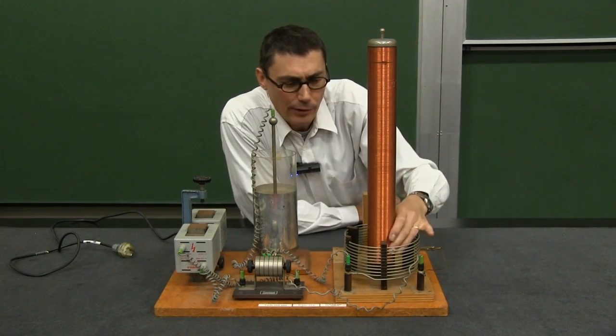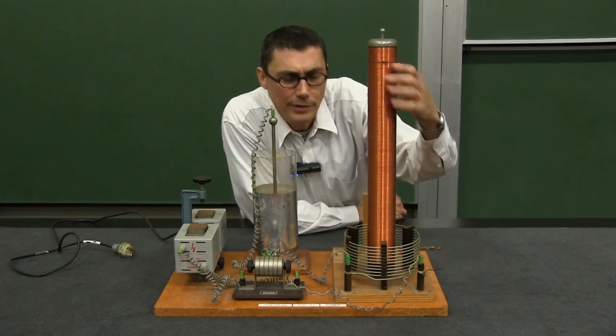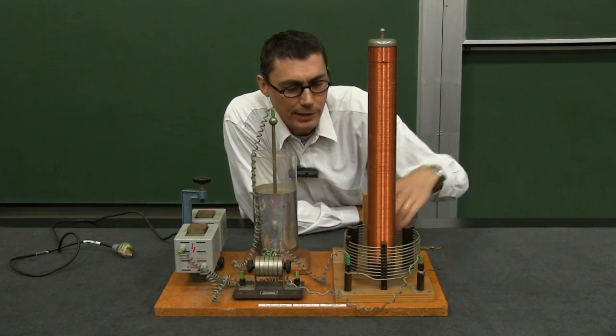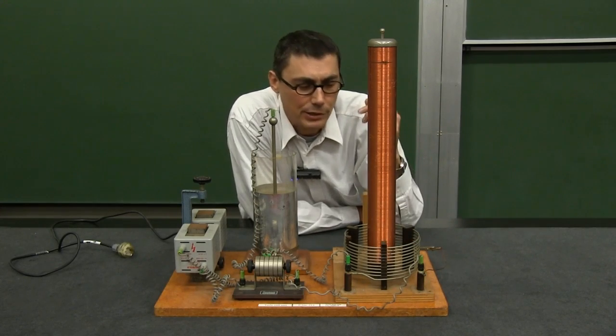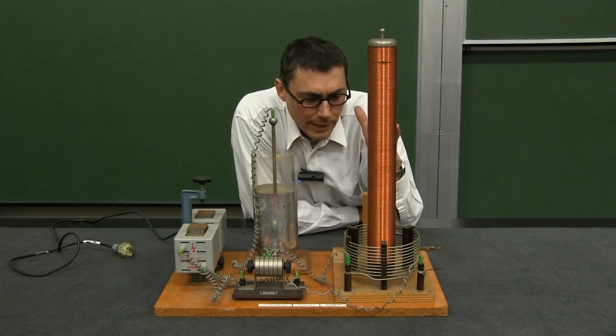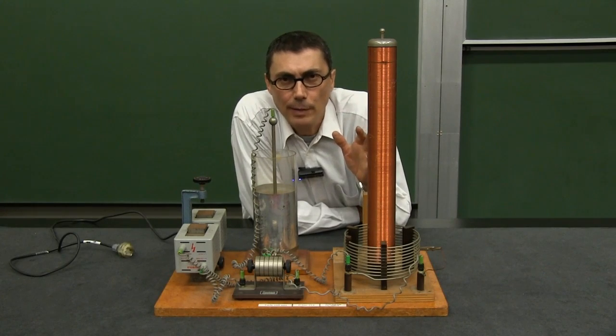You can see I've got a secondary coil consisting of a lot of turns and then a primary coil consisting of a small number of turns. So big turns ratio gives you a big voltage, but it's not enough just to have a transformer.